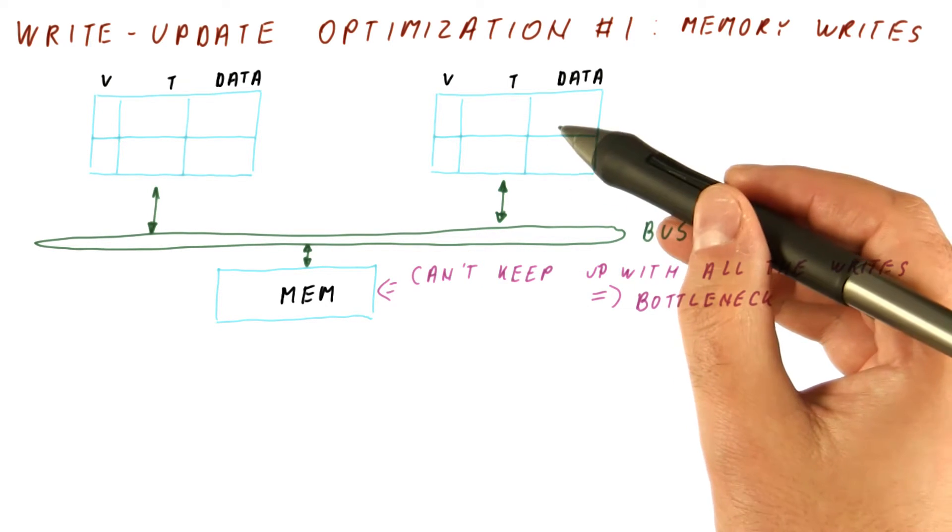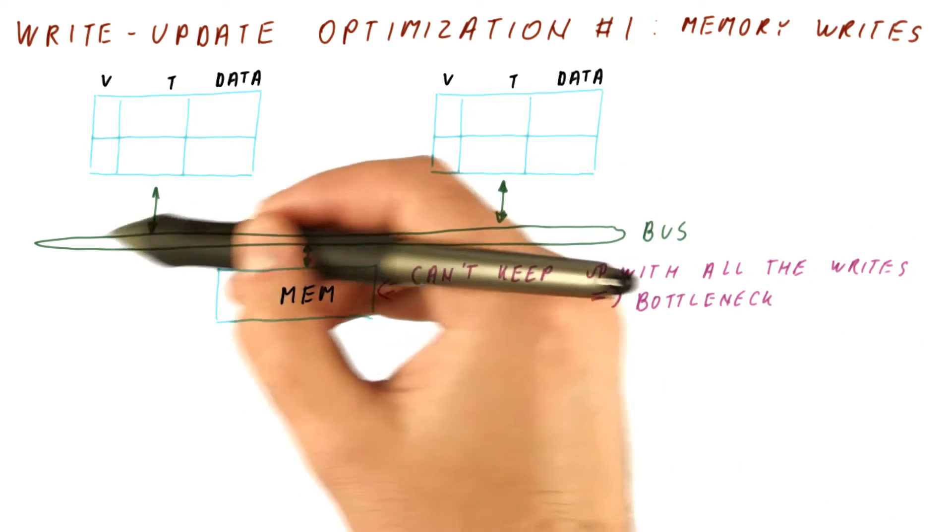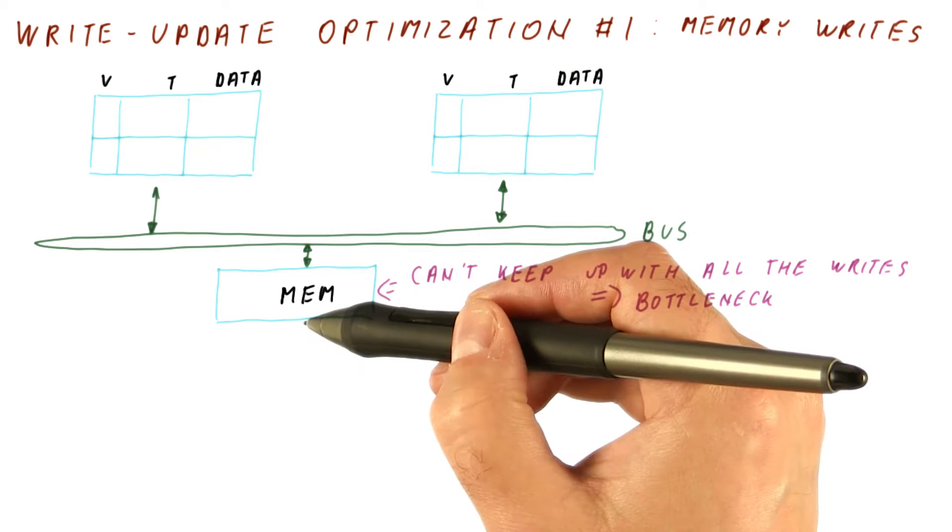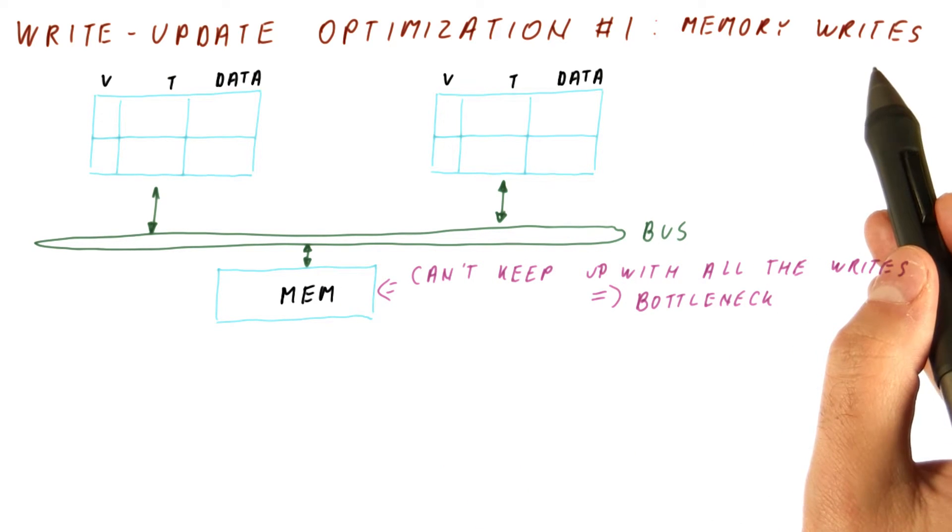And that means that the memory throughput becomes a bottleneck for this system. It's not about how much traffic can the bus take, it's about how much traffic can the memory take. So we want to avoid unnecessary memory writes.